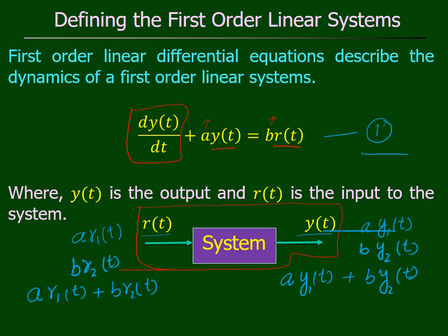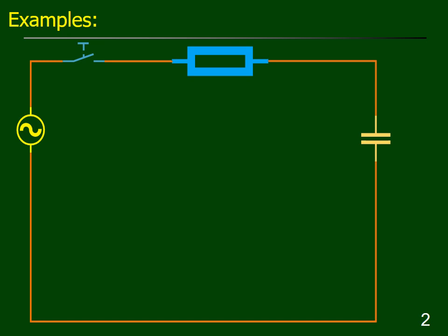If the dynamics of a linear system can be represented by a first-order differential equation of the standard format, we say it is a first-order linear dynamic system. Let us explain this concept with an example from electrical circuits. In this circuit, the input is v_i(t) and the output is the voltage across the capacitor, v_C(t). Assume the capacitance value is C and the resistance value is R, both constant.